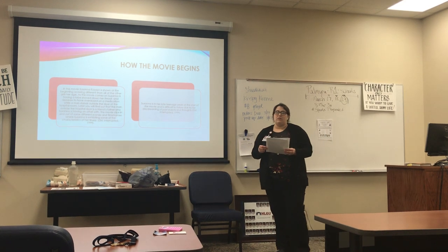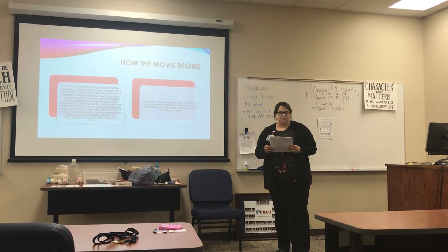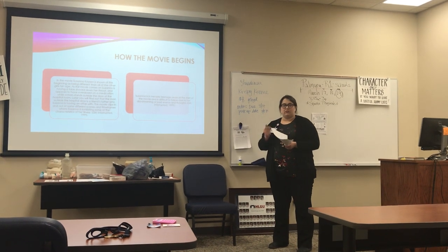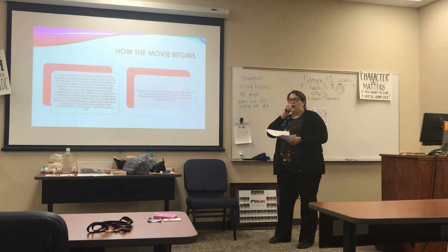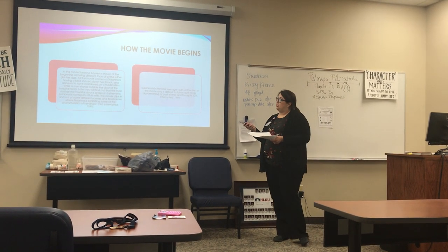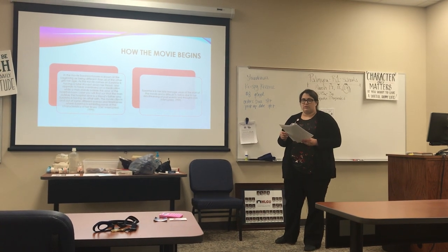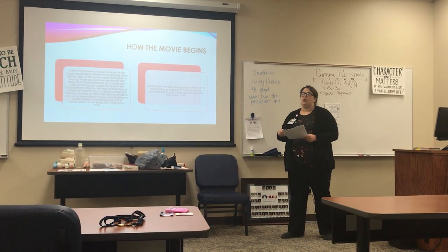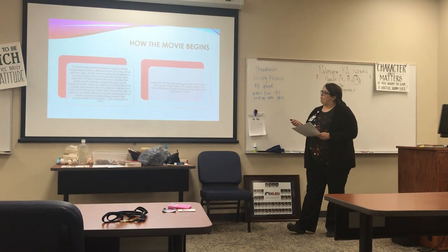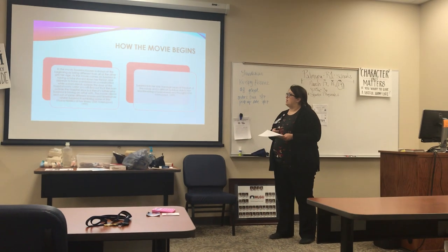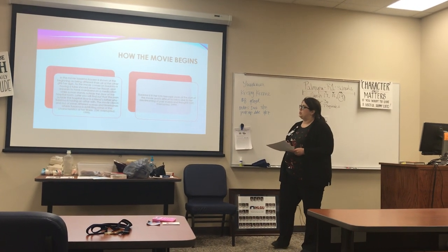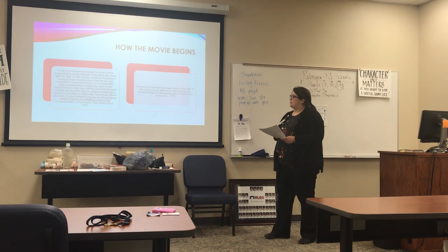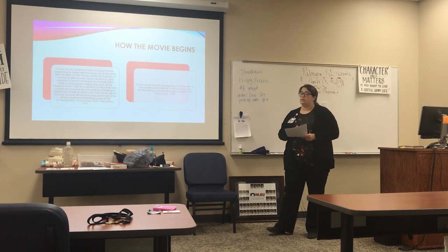In how Girl Interrupted begins, Susanna Kaysen is shown at the start as being different than all the other girls her age. Susanna does not plan on going to college and is quite laissez-faire about her future while most other girls her age are going off to college. As the movie opens, Susanna is having a tube shoved down her throat and appears to have overdosed on medication, while a man stands outside of the hospital room door — later revealed to be a friend's father whom Susanna is having an affair with.